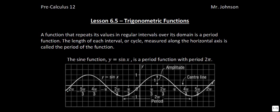We'll be looking at periodic functions much like the sine function we have here. We'll also be looking at cosine and tangent because they're all periodic functions. The length of each interval or cycle measured along the horizontal axis is called the period of the function. The sine function shown here has a period of 2π.